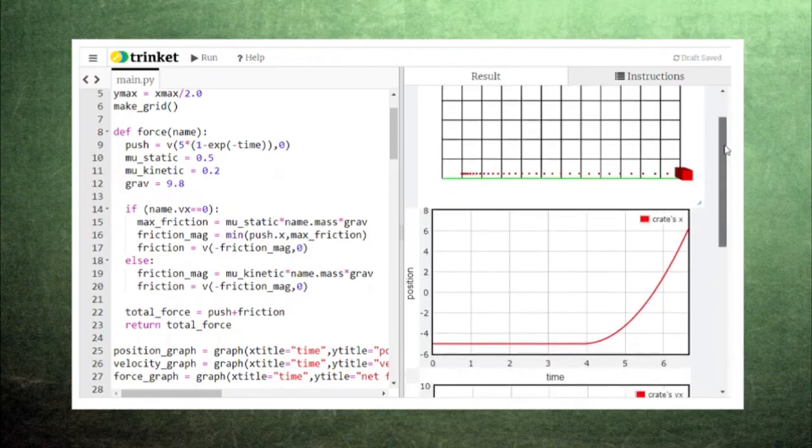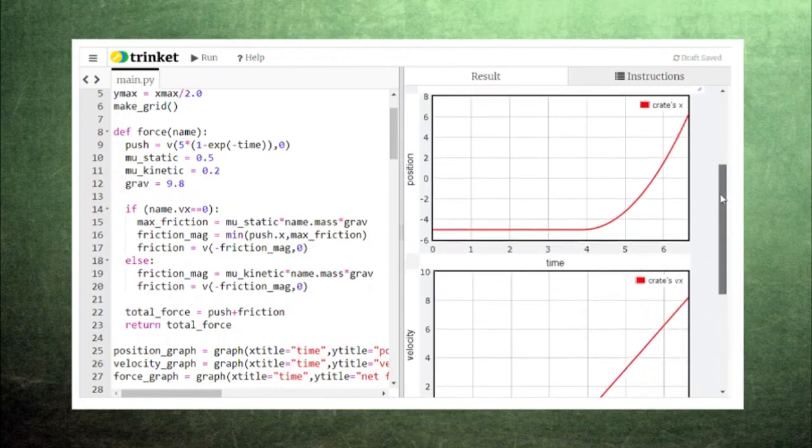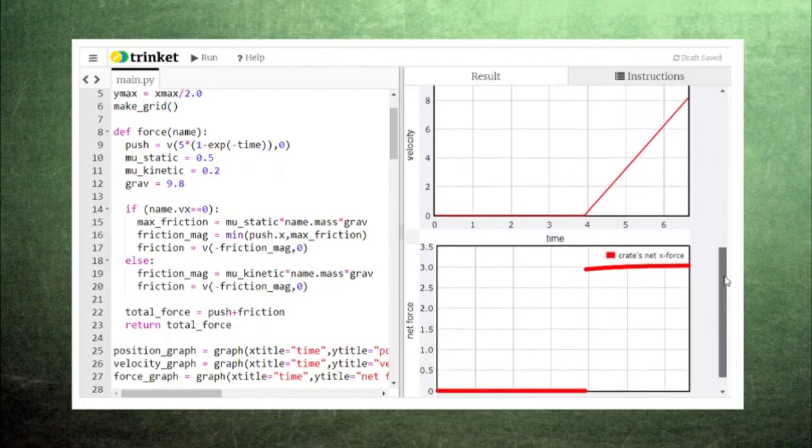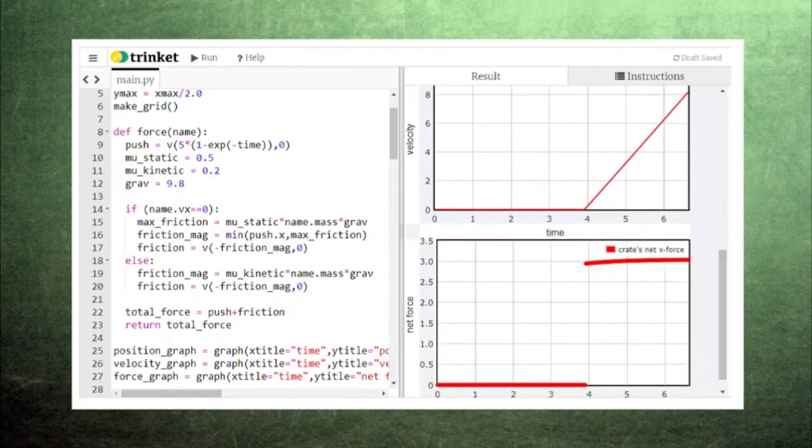Notice the sudden change in the slope of the velocity graph at the moment the crate breaks free. This sudden change is accompanied by a jump in the value of the net force. This jump occurs because the kinetic friction force is weaker than the maximum static friction force.